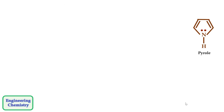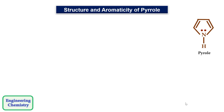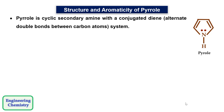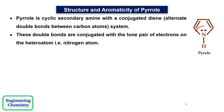Now let's understand the structure and aromaticity of Pyrrole. As we can see, Pyrrole is a cyclic secondary amine with a conjugated diene. Conjugated diene means there is a presence of alternating double bonds between carbon atoms. These double bonds are conjugated with the lone pair of electrons on the heteroatom, that is the nitrogen atom.